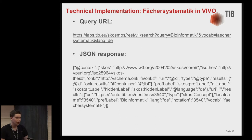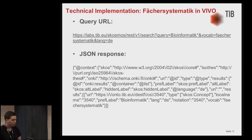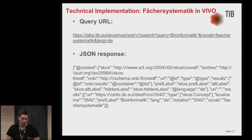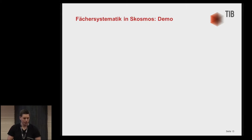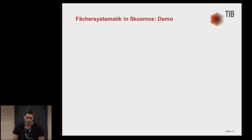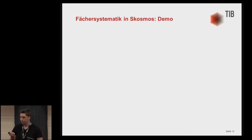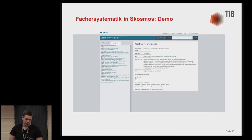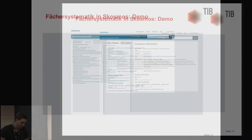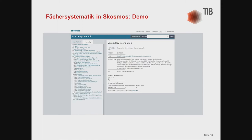Here you can see our query URL with the search term 'bioinformatic' and our vocabulary Fächersystematik, with the corresponding JSON response shown below. In our SKOSMOS installation, you can see on the left-hand side the alphabetical index and the hierarchy. We are looking for 'bioinformatic', which is shown there. We are also able to see the broader and narrower concepts of informatics.